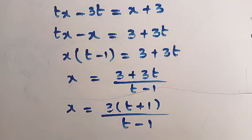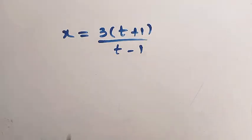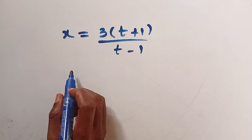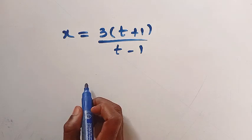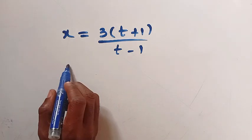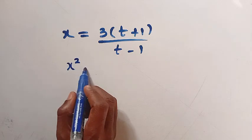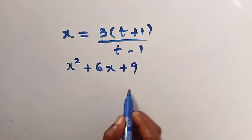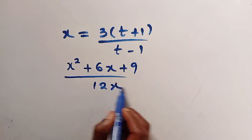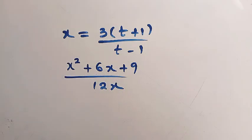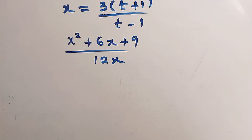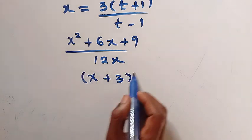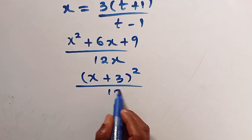The next thing is, looking at the other side of the function, we have x squared plus 6x plus 9, divided by 12x. At the numerator we have a quadratic, which we can rewrite as (x+3)² divided by 12x.